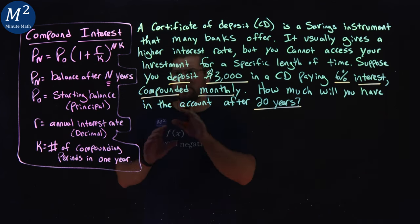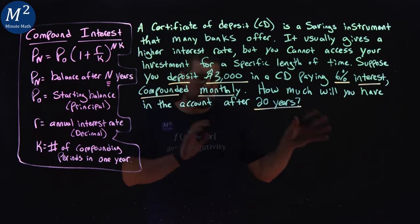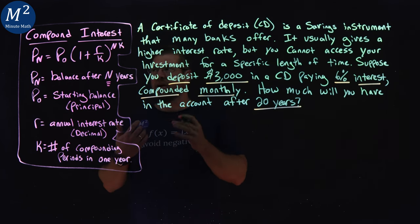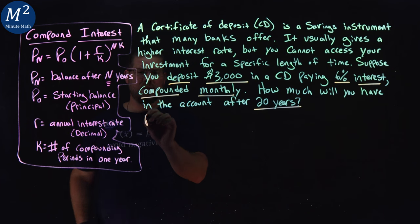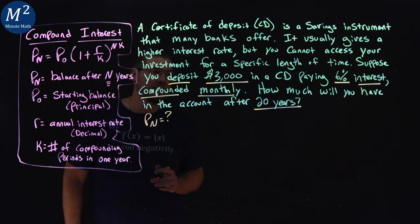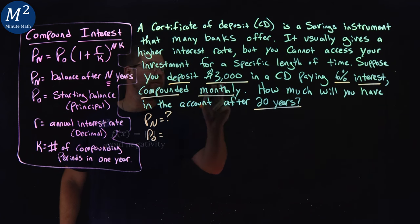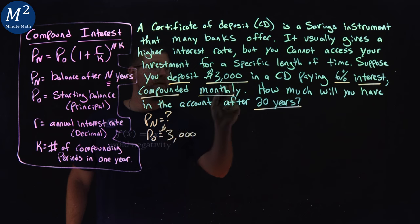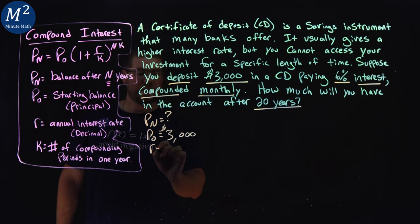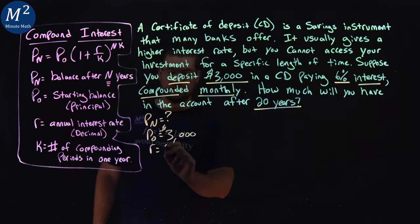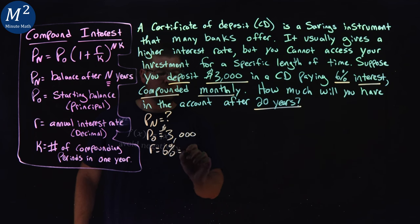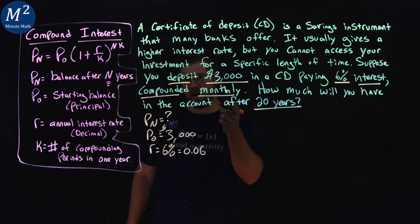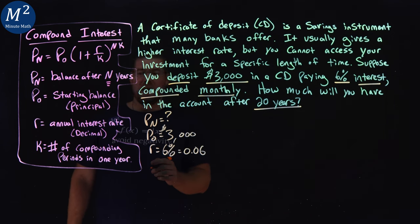So, let's go put our information, let's write it out. Don't just jump into the formula. Let's make sure we understand everything we need. P sub n, that's what we want to find, the end amount. P sub 0, our initial amount is $3,000 right here. Our rate is 6%, but as a decimal, 0.06 right there. Make sure it's as a decimal. That's a common mistake I'll see.